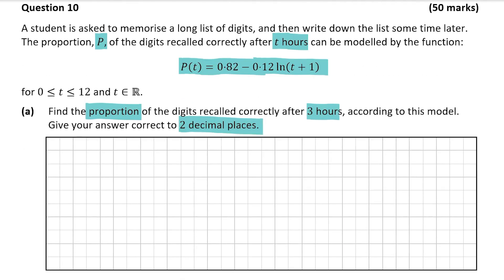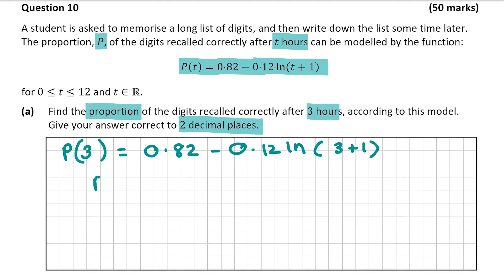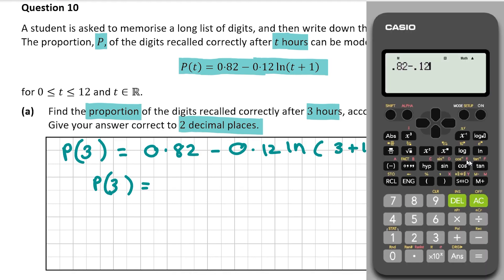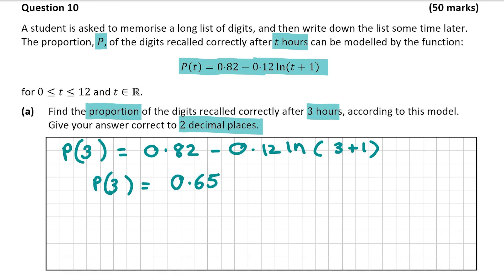Writing down the model with T = 3: P(3) = 0.82 minus 0.12 ln(3 + 1) = 0.82 minus 0.12 ln(4) = 0.65. That's worth 5 marks. Note: if the question asked for a percentage, make sure to write 65%, but since it asks for the proportion we leave it as 0.65. In this year's marking scheme you'd also get full marks for the percentage, but know the difference.